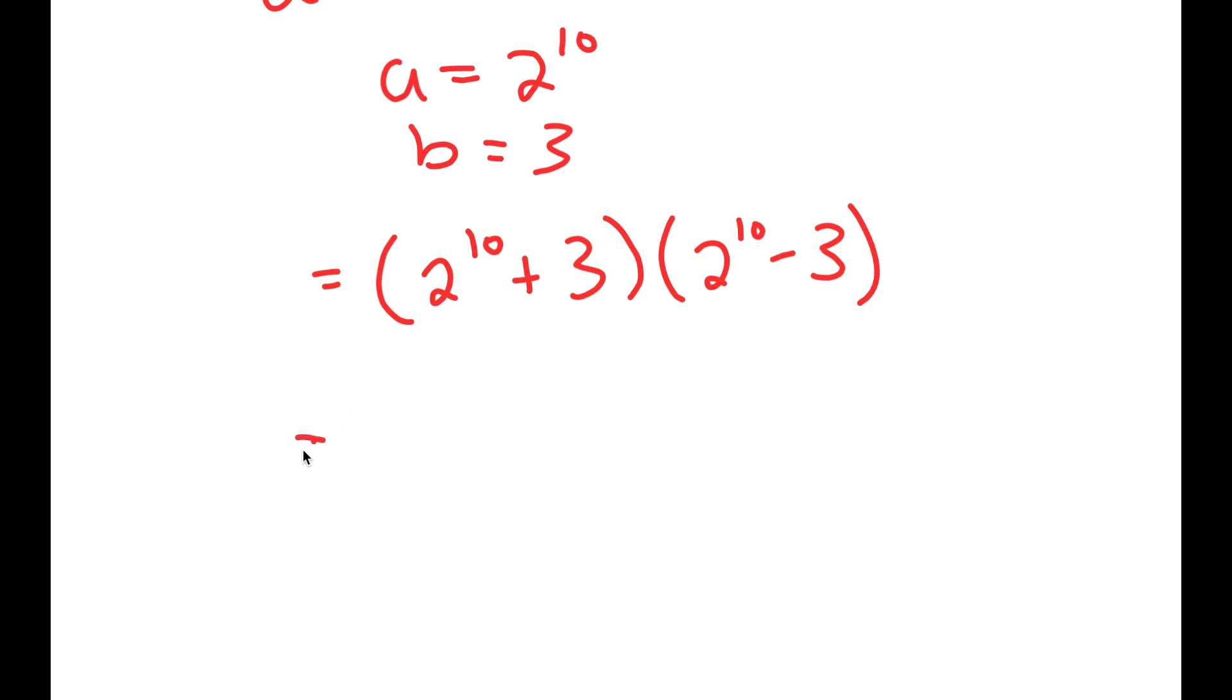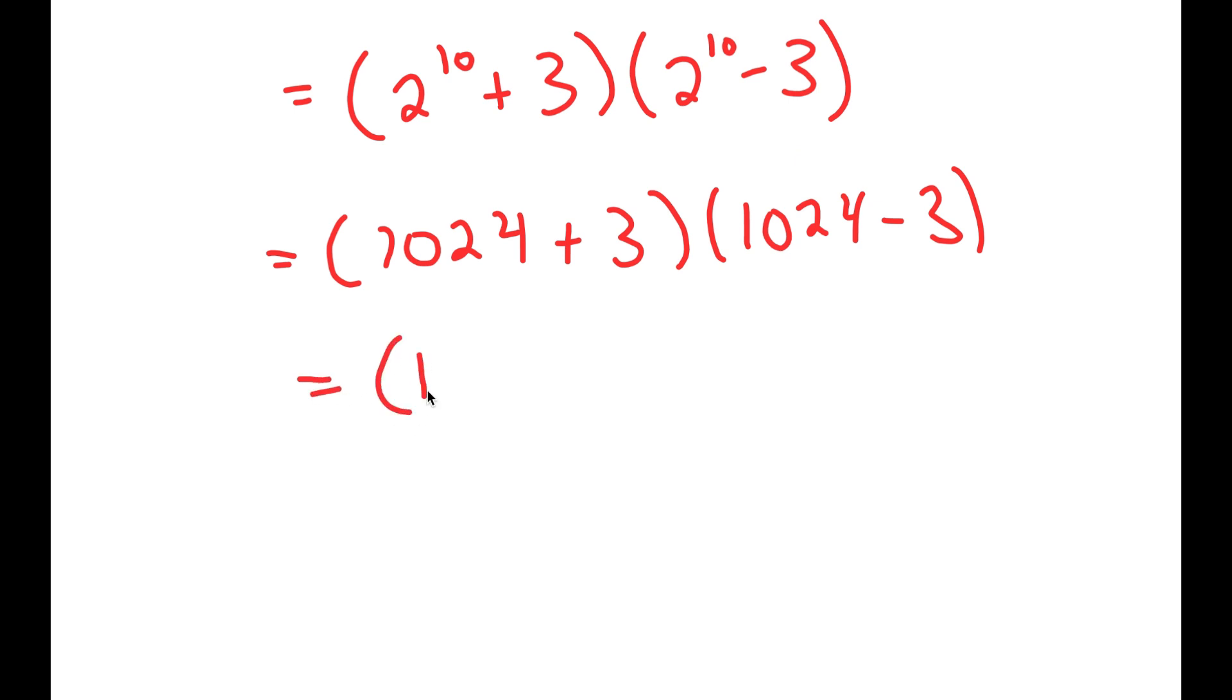Now, 2 to the power of 10 is equal to 1,024. So I get 1,024 plus 3 times 1,024 minus 3. And 1,024 plus 3 is 1,027, 1,024 minus 3 is 1,021.